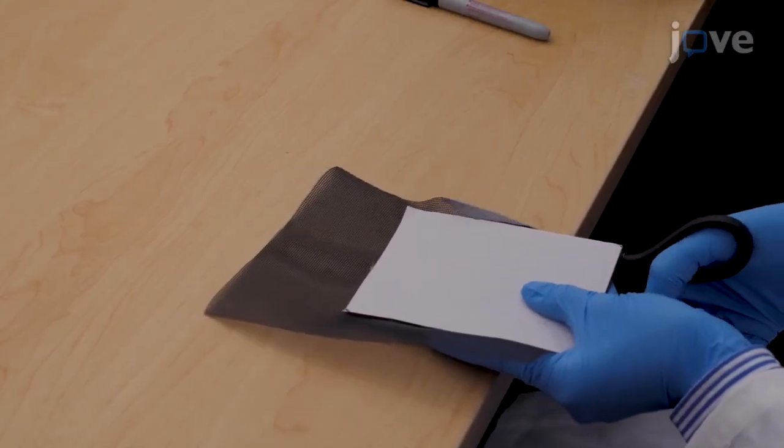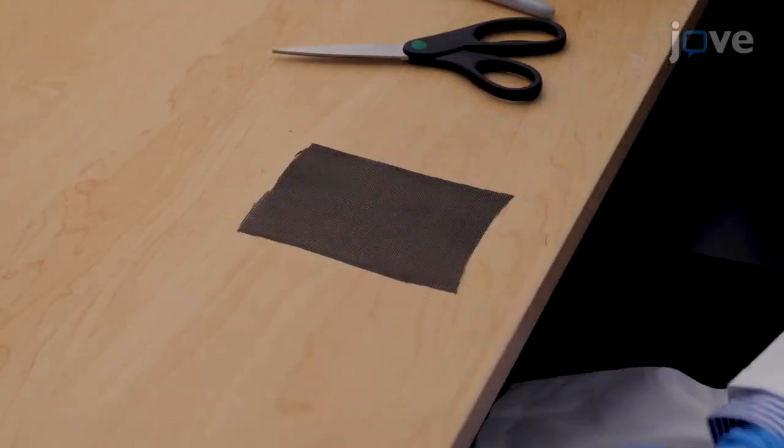Then, use the cardboard template to create a piece of small insect screen mesh the size of the plate.